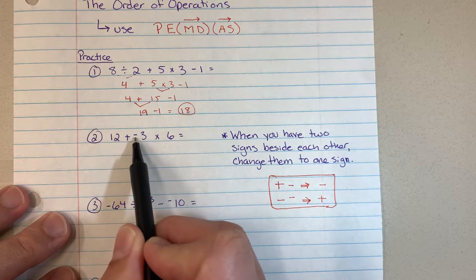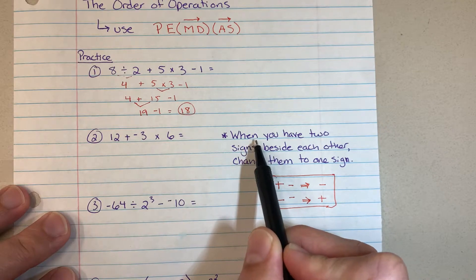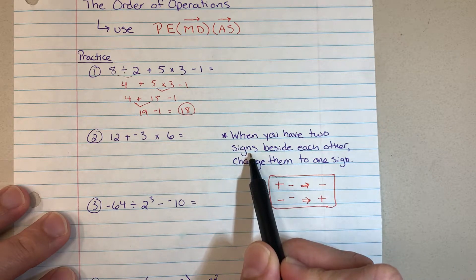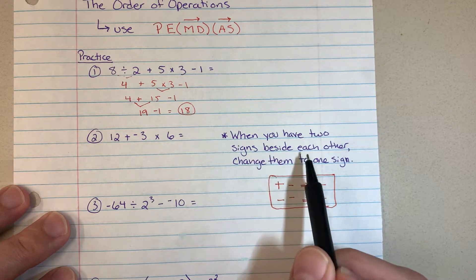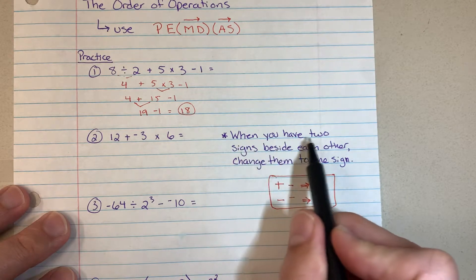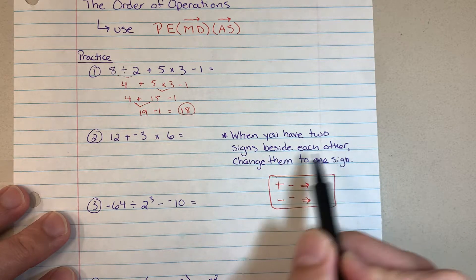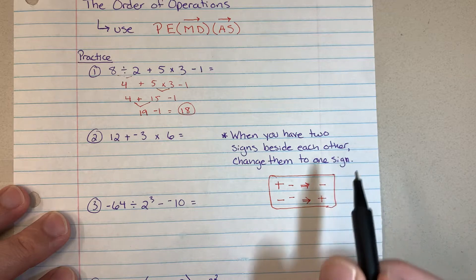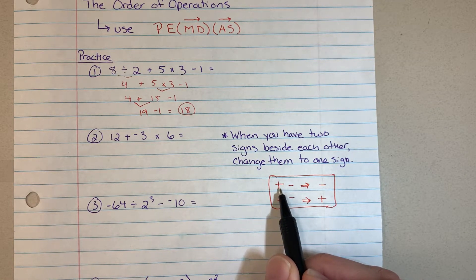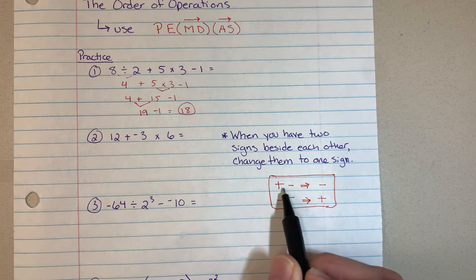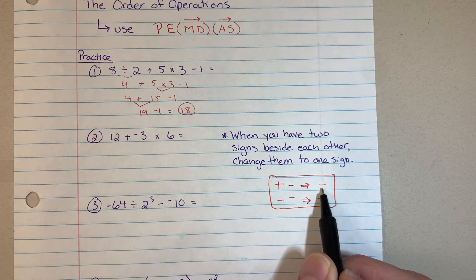Anytime you've got double signs, you want to go ahead and change them to just one sign. When you have two signs beside each other, change them to one sign, and here's what you do. If those double signs are mixed, if they're a plus and a minus sign, you're going to change it to a minus.